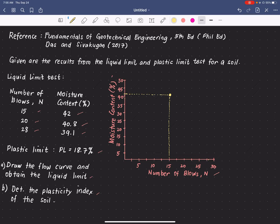The next data shows an N value of 20. So that is here and it has a corresponding moisture content of 40.8. So we go down a little. So this is about 40.8, so let's go down a little. So I'll put it somewhere here.